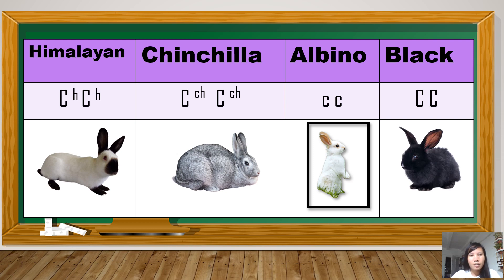Let's move on to the genotypes for each allele that represents a particular coat color in rabbit. This will be our guide to solve the problems later on. For the Himalayan, the symbol or genotype is capital letter C raised to small letter h. There's the clue, h for Himalayan.